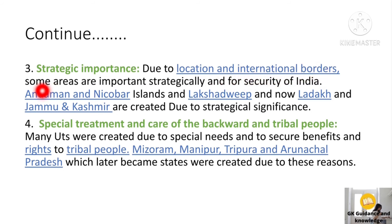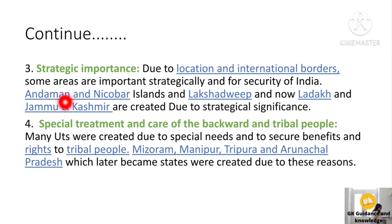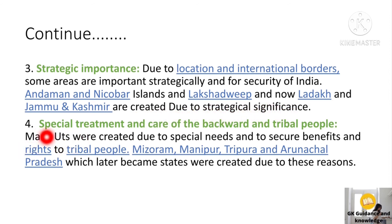The third reason is strategic importance. Due to location and international borders, some areas are strategically important for the security of India. For example, Andaman and Nicobar Islands, Lakshadweep, and now Ladakh and Jammu and Kashmir were created as union territories due to their strategic importance.